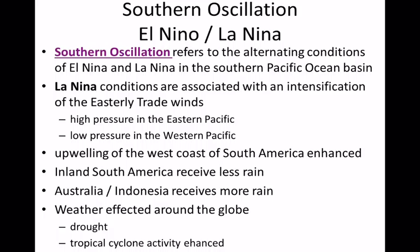La Niña is somewhat the opposite of El Niño. In La Niña, the easterly trade winds don't reverse like in El Niño — they actually intensify. So we get an extra dose of precipitation over Australia and Indonesia. South America and Peru will be even drier. Tropical cyclone activity is enhanced during La Niña — if you want to put 'hurricane' in your notes, you can. If we're entering La Niña from El Niño, that's one factor in hurricane season. El Niño tends to favor inland severe weather like tornadoes.